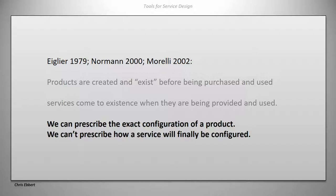The difference between products and services is that you can configure a product very precisely. But you cannot entirely configure a service because there are too many unknowns — too many chances of deviation to even budget for. So you need to allow for a lot of flexibility, improvisation, and probably follow-up work in service design.